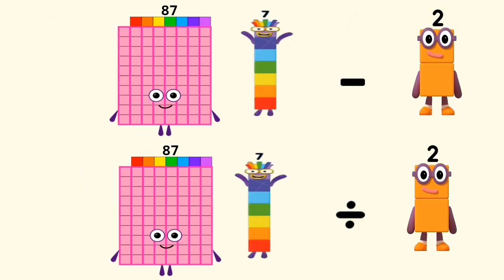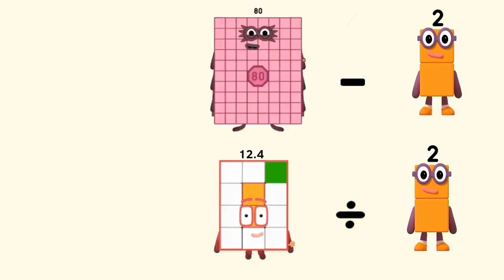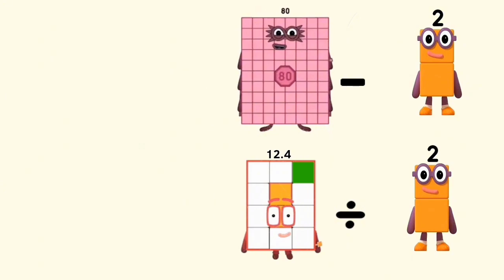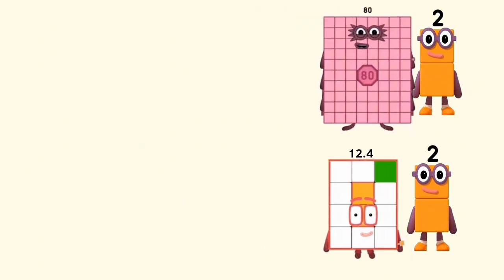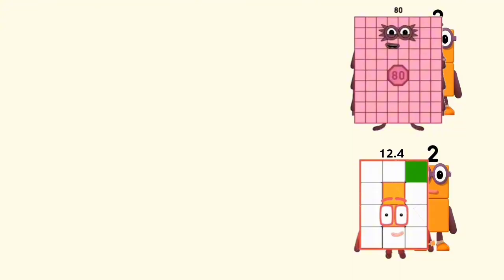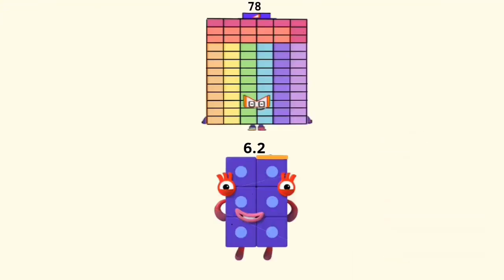87 minus and divided by 7 equals 80 and 12.4. 80 minus 2 and 12.4 divided by 2 equals 78 and 6.2.